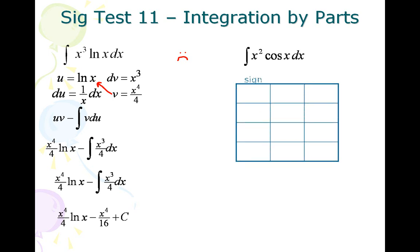So remember with tabular, you're going to put your sign, u and then dv. Sign goes plus, minus, plus, minus. u is x squared, you take its derivatives going down, so it's 2x, 2 then 0.